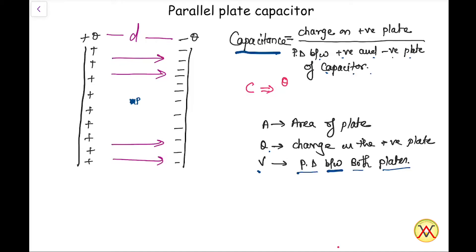So our formula becomes C equals Q upon V, where V is the potential difference between both the plates. Let us say the potential of the positive plate is V positive and the potential of the negative plate is V negative. Our purpose is to calculate the ratio of Q upon V, which will be called the capacitance of our capacitor.